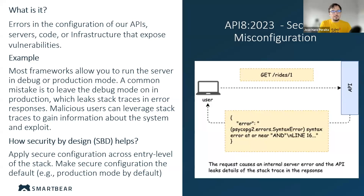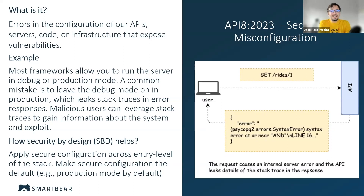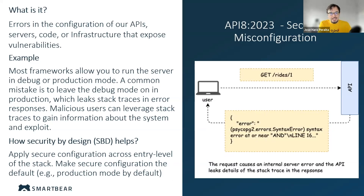From a design point of view, we want to make sure we are applying restrictive and secure configuration across the stack by default. Some frameworks — perhaps all frameworks — allow us to run the web server in debug mode or production mode. Let's make production mode the default so we don't run into these issues by accident. If we want to run in debug mode in certain environments, we can switch on that flag actively.